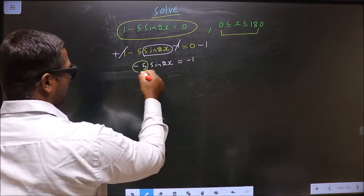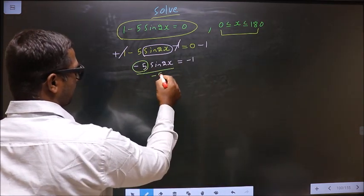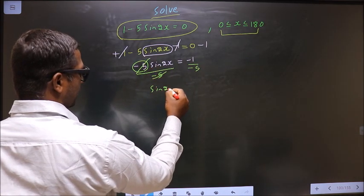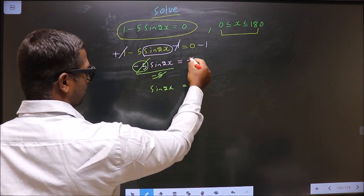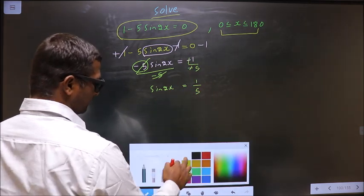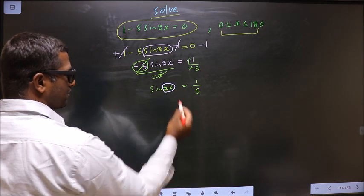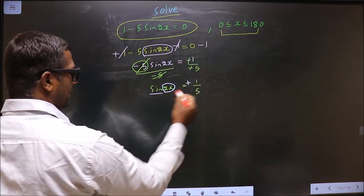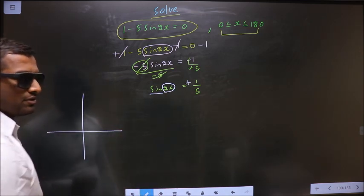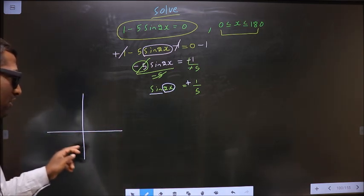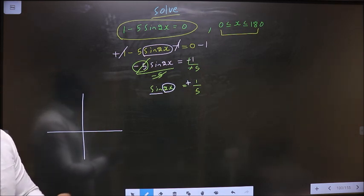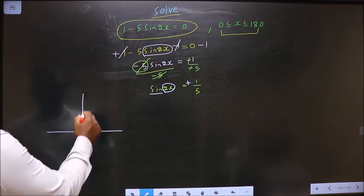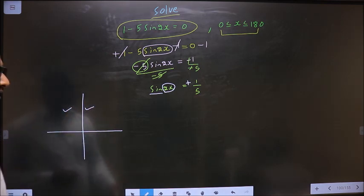Now to remove minus 5, you divide by minus 5. So we get sin 2x equal to 1 by 5. Now to get the values for 2x: here we have sin and it is positive. So now you check in what all quadrants is sin positive. It is all silver tea cups. Sin is positive in the first and in the second.